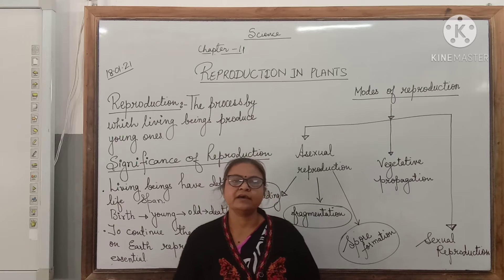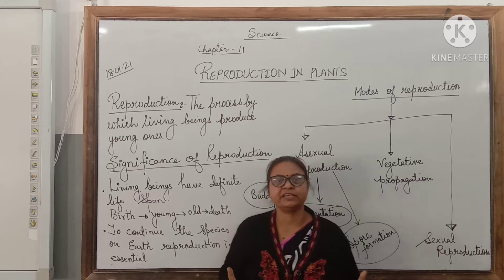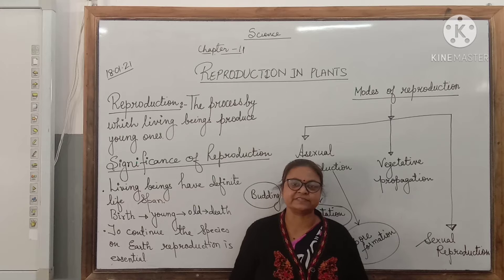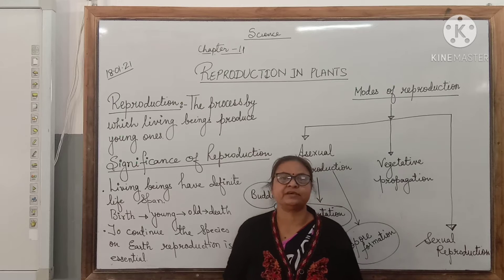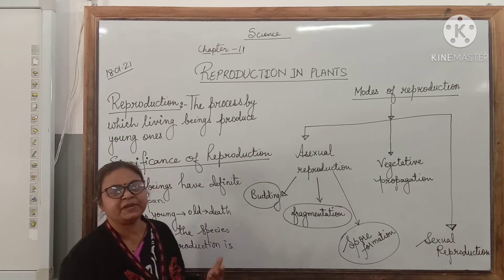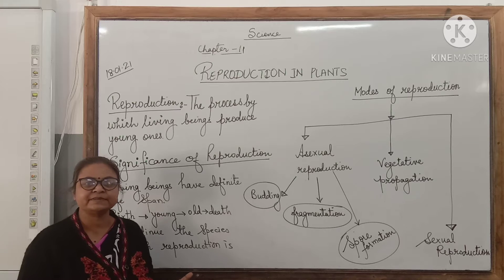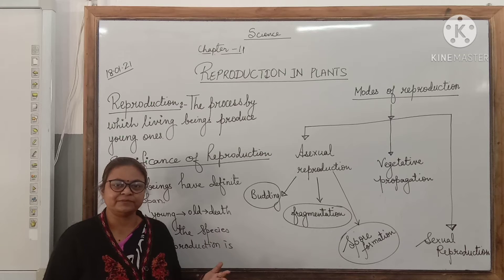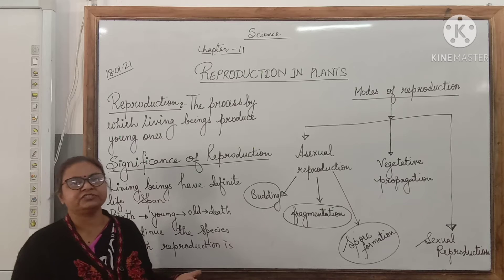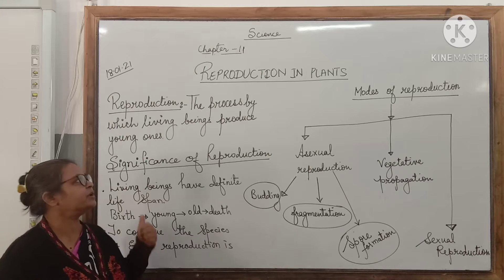We know that living organisms are different from non-living things by having several different characteristics. These characteristics make them unique. For example, living beings breathe, they respire, they move from place to place, they show growth, they need food for their energy requirements, and one of the very important characteristics is reproduction.